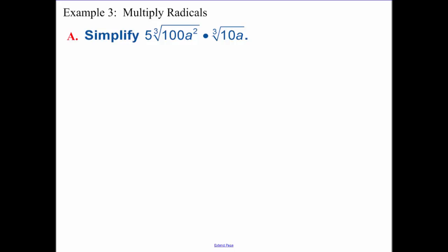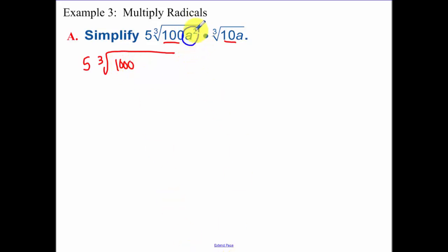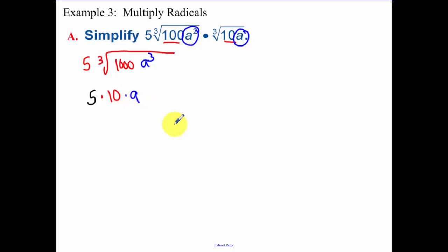Now multiplying radicals — really, we've been doing this all along. You can combine all this stuff under one radical, so one hundred times ten can be one thousand. The a squared times a can turn into a cubed. Now it's just a matter of finding the cube root of those. The cube root of one thousand is ten, the cube root of a cubed is a, so this is going to simplify to ten a.